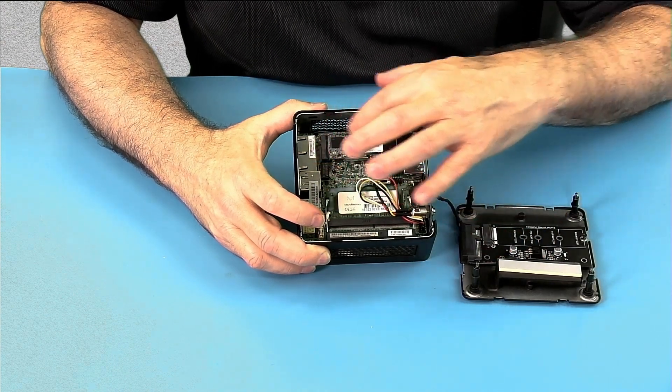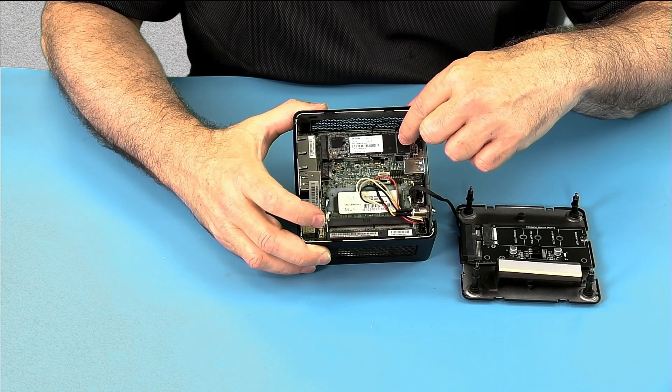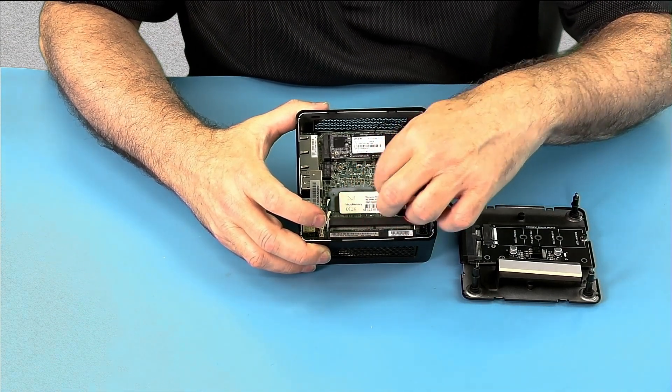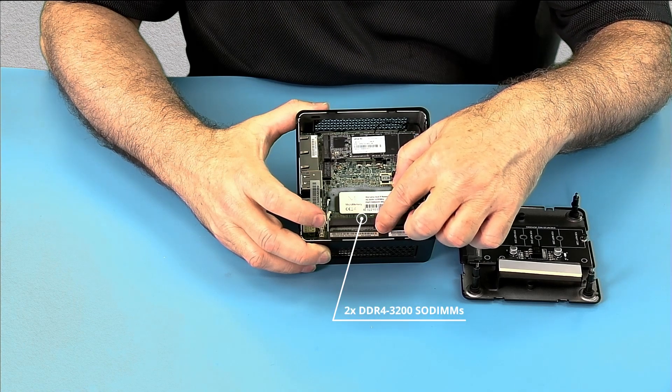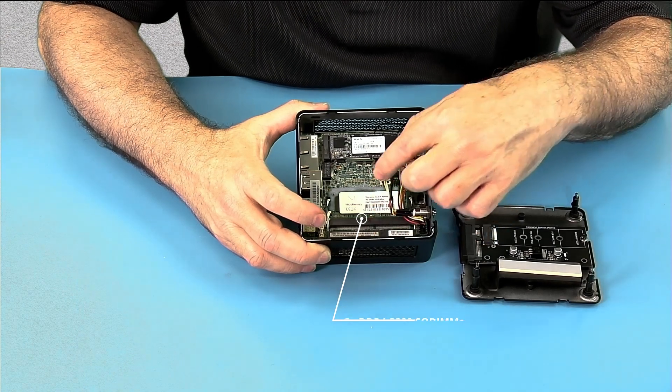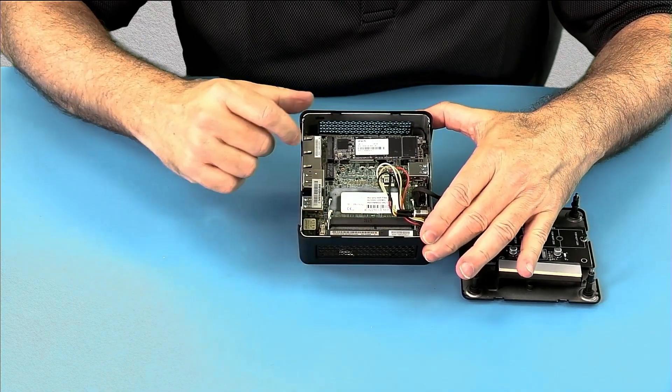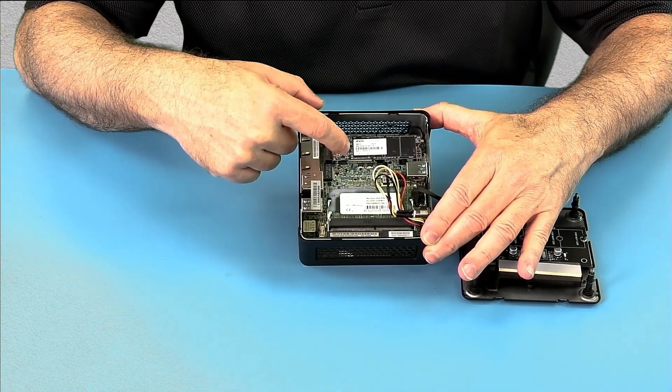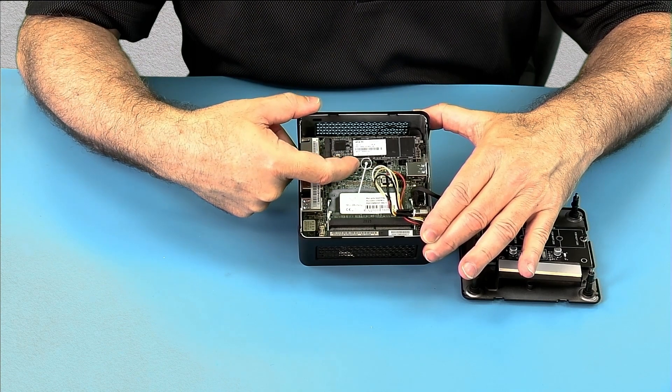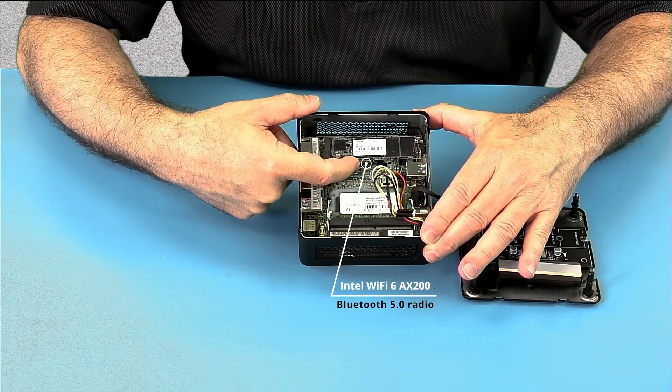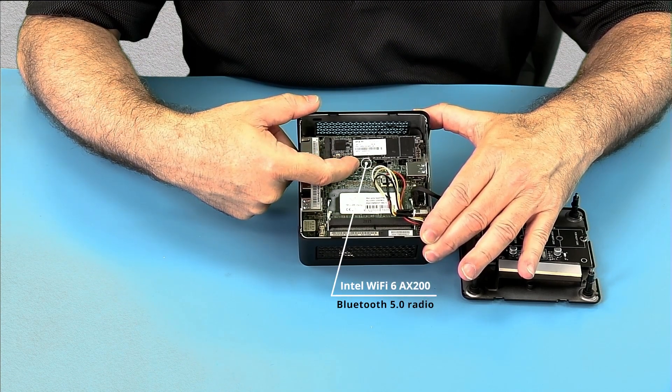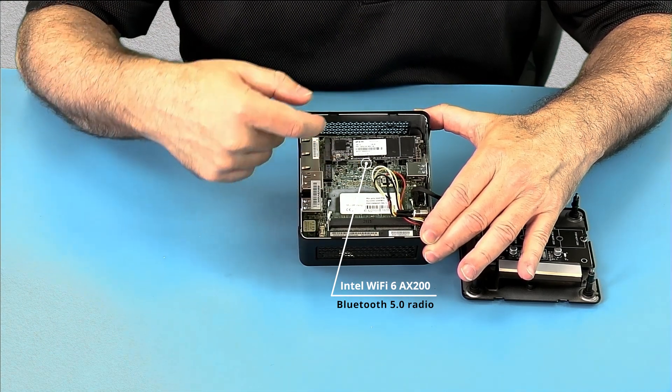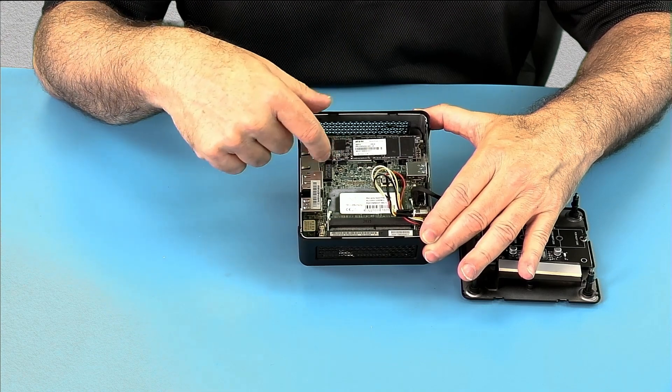Inside, we have our 2280 SATA or PCI Express SSD. We have two DDR4-3200 slots. We also have, underneath the 2280 SSD, we have a radio. This is the wireless AX, AX200 radio, Wi-Fi 6. And it is socketed, so it can be replaced or removed.